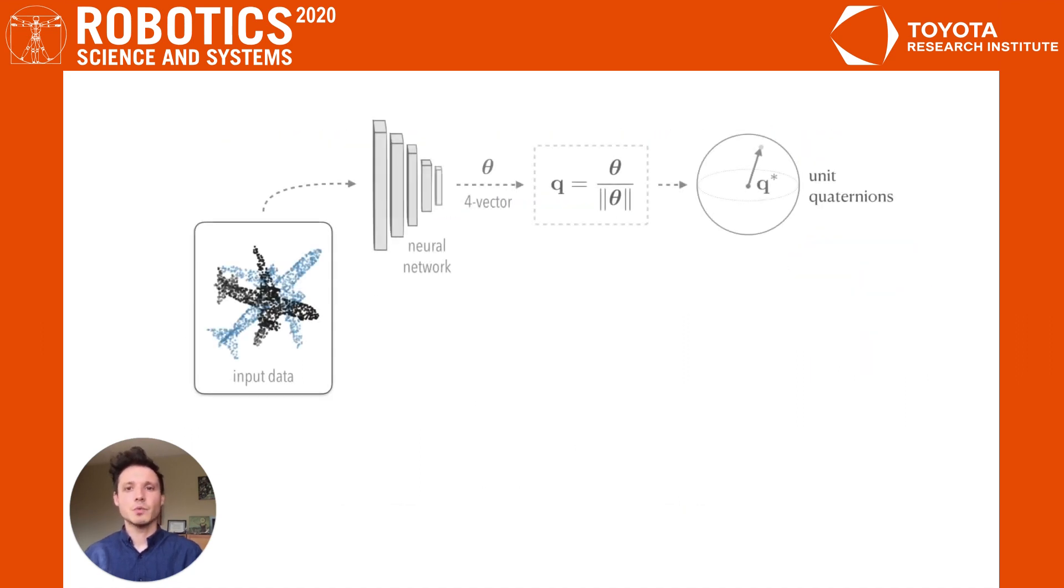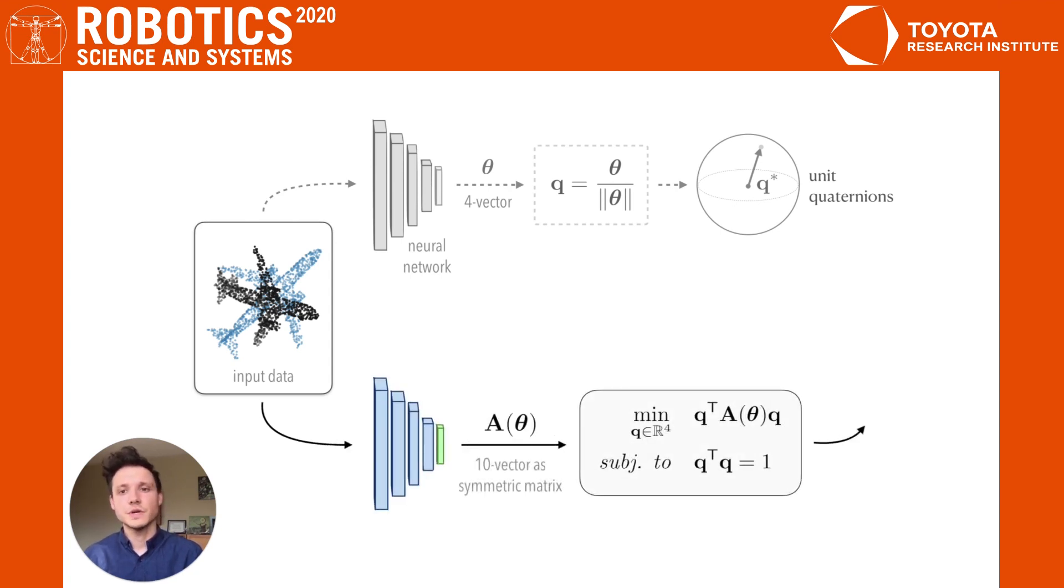A standard network trained to solve 3D perception tasks might simply normalize a 4 vector and interpret the output as a unit quaternion. In comparison, our approach requires the network to output a 10 vector, which we interpret as parametrizing an optimization problem.